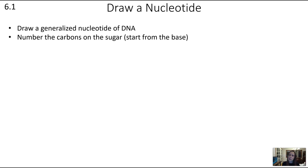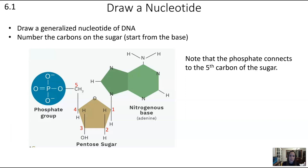If we draw out a generalized nucleotide of DNA, we need all of those components. On one side you have the phosphate group, in the center the sugar, and on the other side the nitrogenous base. The 5 carbons in that 5-carbon sugar are numbered starting at the base: carbon 1 is attached to the nitrogenous base, and we go around to 2, 3, 4, and 5 — with that 5th carbon connected to the phosphate group.